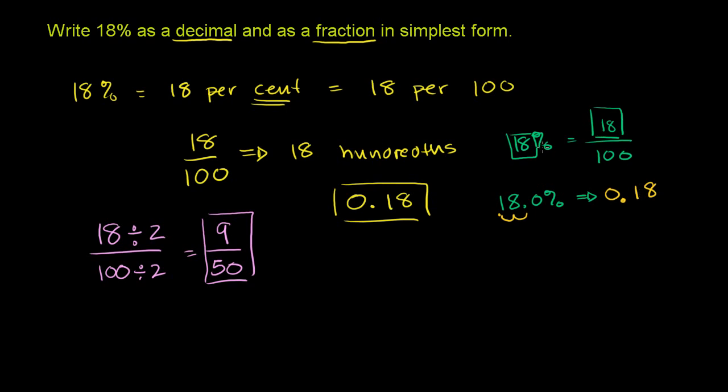Or you could immediately say that 18% as a fraction is 18 over 100. When you put it in simplified form, it's 9 over 50. But you should also see that 18 over 100 is the exact same thing as 18 hundredths, or 0.18. Hopefully this made some connections for you and didn't confuse you.